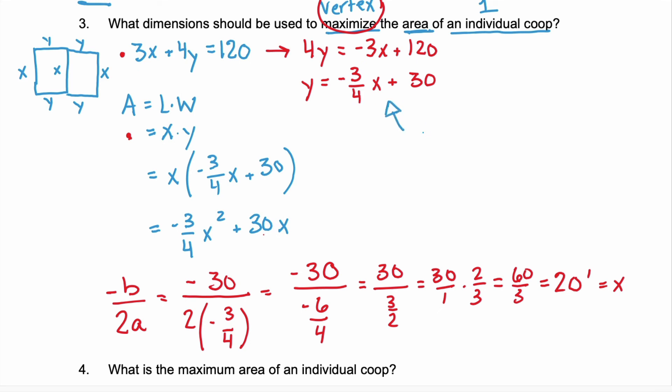We can find the other dimension by going back to that constraint equation, this one right here, to find y. So y, let's actually use the original. We don't want to use the altered. Let's do the 3x plus 4y equals 120. We know x is 20. So 3 times 20 plus 4y equals 120. This is 60 plus 4y equals 120. Subtract the 60 from both sides. And you have 4y equals 60. Divide by 4. And y equals 15.